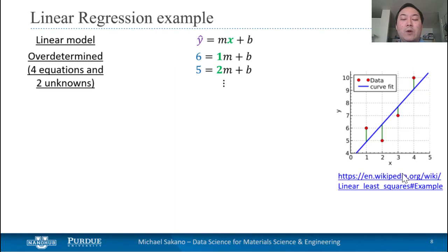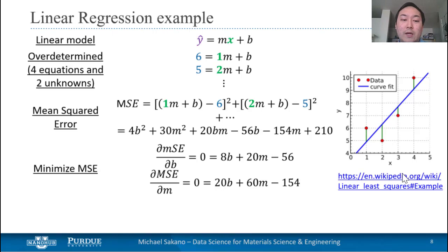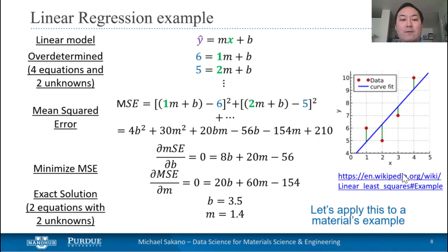Now let's look at a real example of defining a linear model using real data points. This data is obtained from the link on the right side of the screen and can be visualized above. First, we define our linear model and then define the equations based on the points in our model. We compute the mean squared error and minimize the MSE by taking the partial derivative with respect to the two parameters of interest, m and b. Upon doing so, we see that we have an exact solution because we have two equations with two unknowns, and so we can find our optimal b and m.